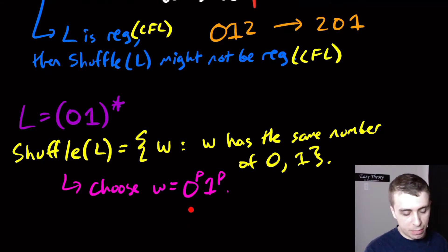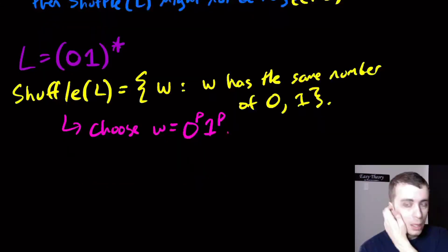Then by the regular language pumping lemma, we will only be pumping in the zero part, putting more zeros in, causing a different number of zeros and ones. That's pretty easy to do.